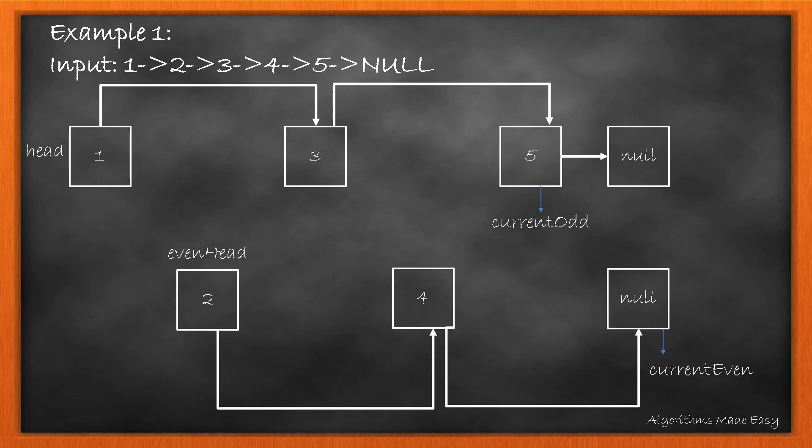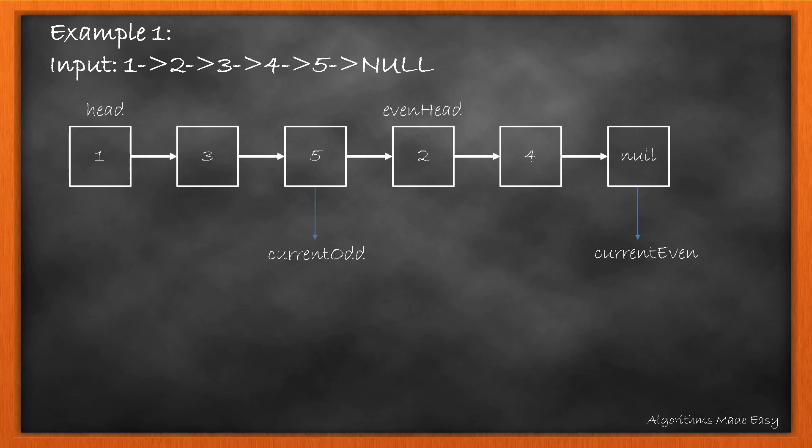If we pull aside the two lists, it will be more clear to us that we have successfully separated even and odd numbered nodes. As we need odd numbered nodes first followed by even, we join both. We update the next of currentOdd with evenHead. This joins the two lists. When we flatten out this new list, it is indeed the result that we wanted.